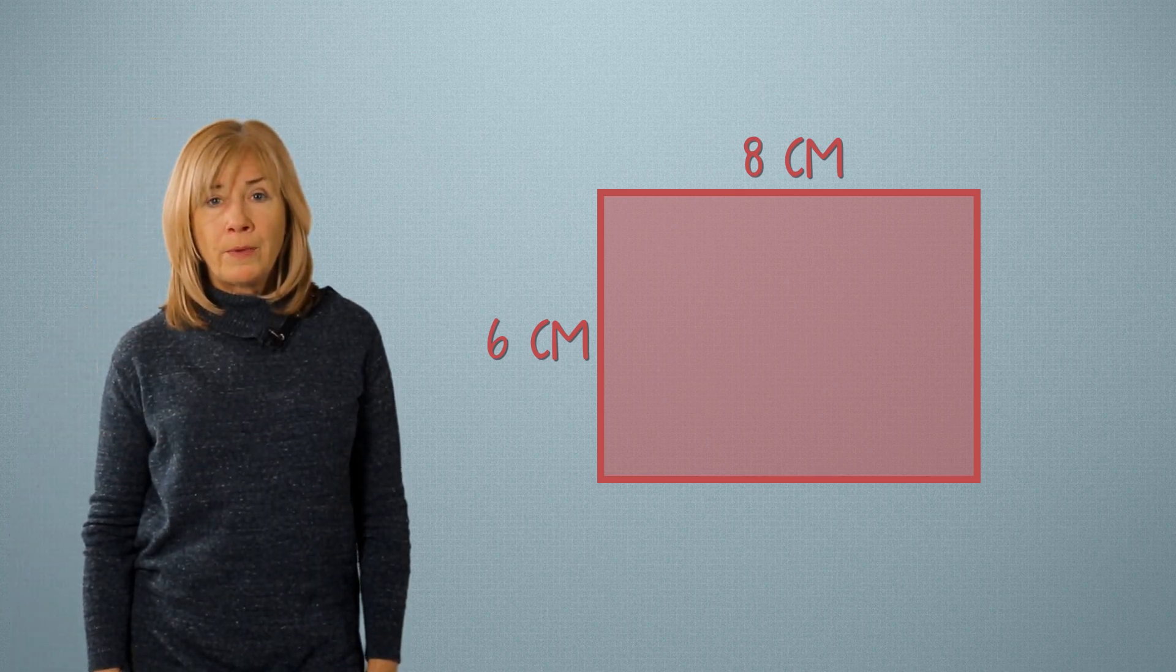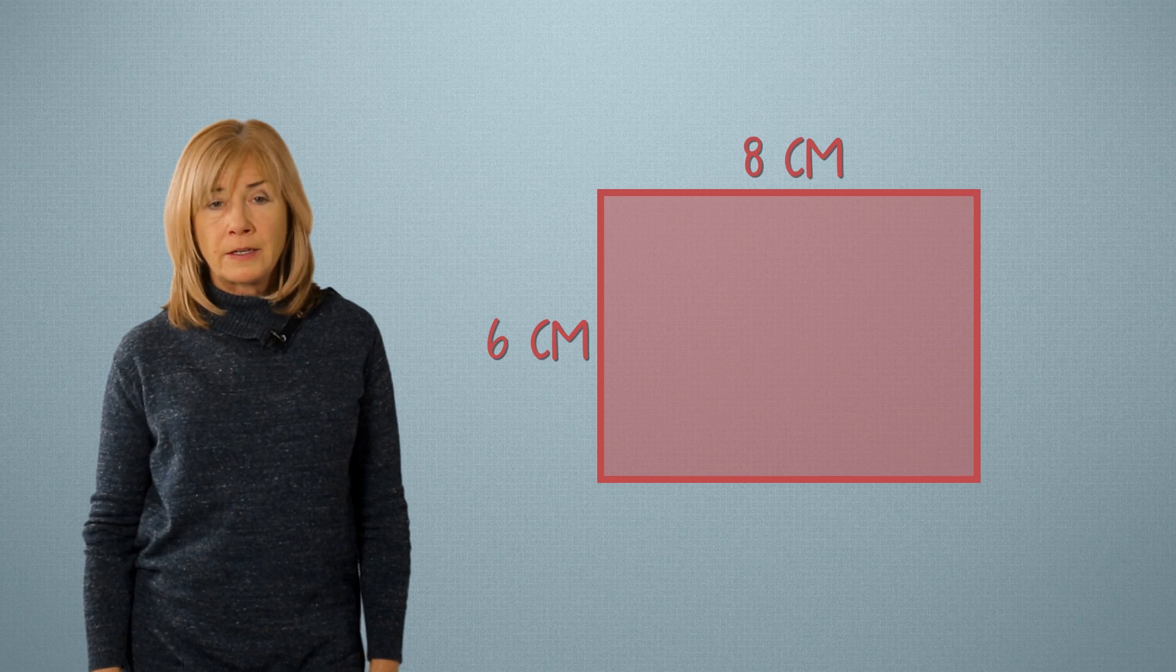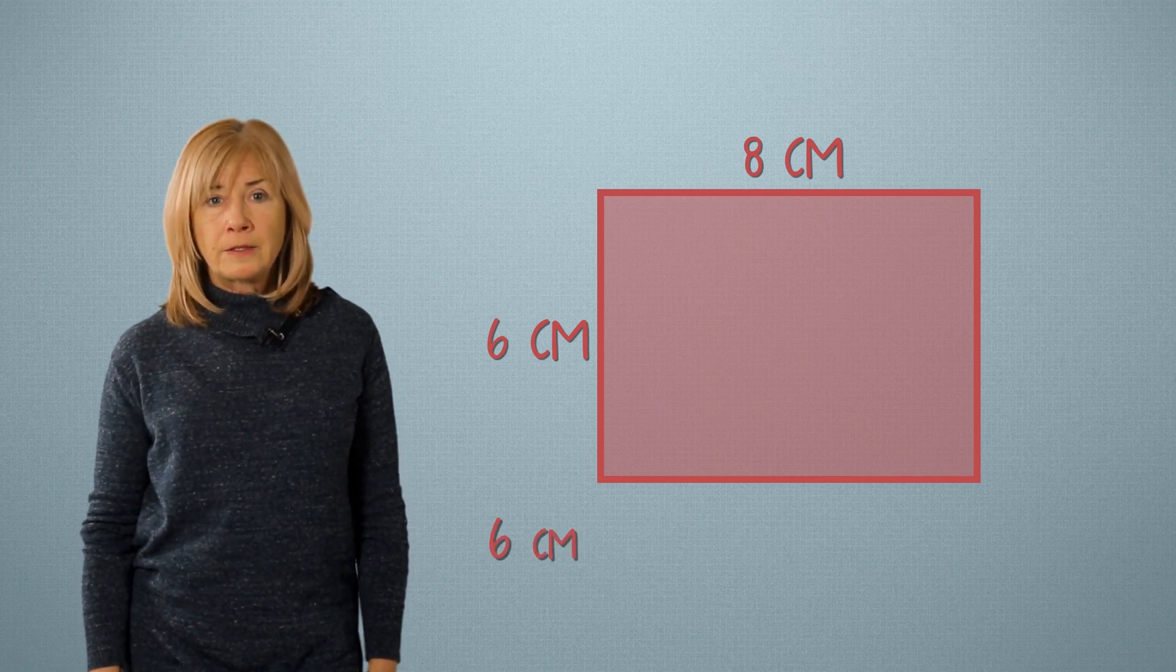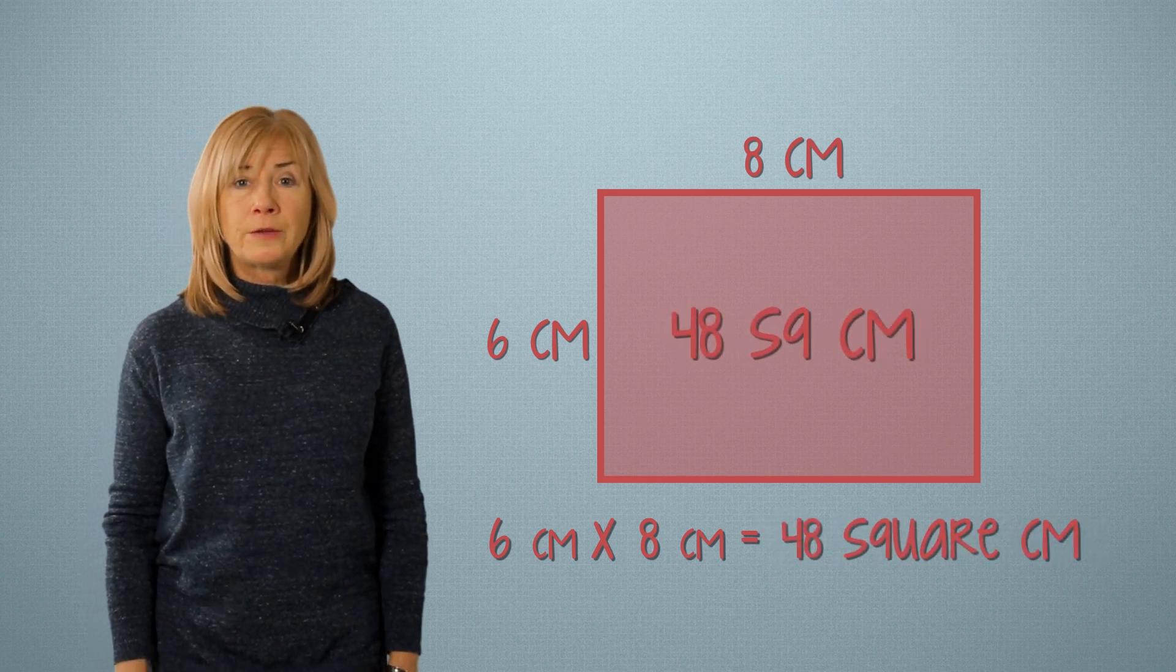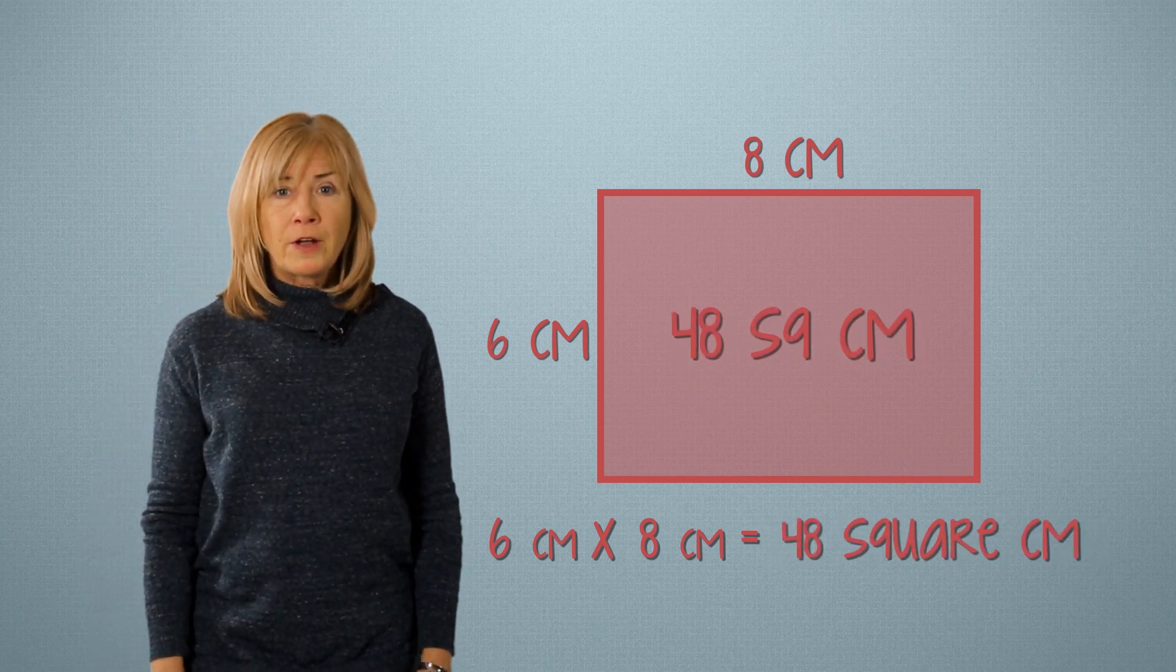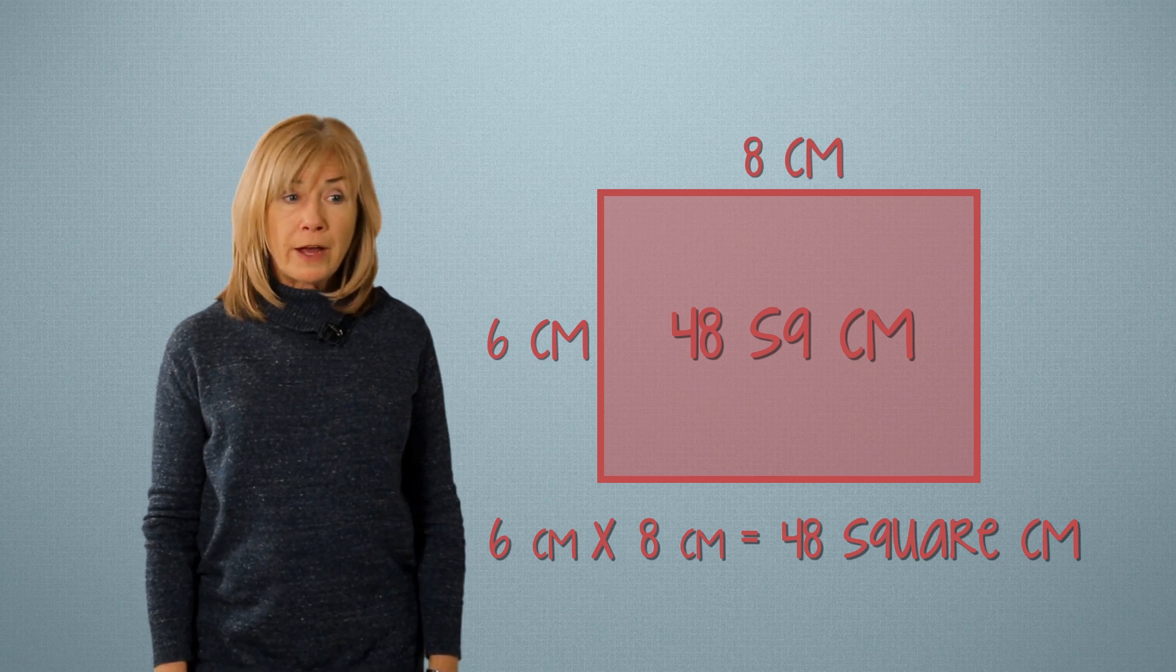To find the area, we multiply the two sides. 6 centimeters times 8 centimeters equals 48 square centimeters. I think you've got the hang of it. Try a few more.